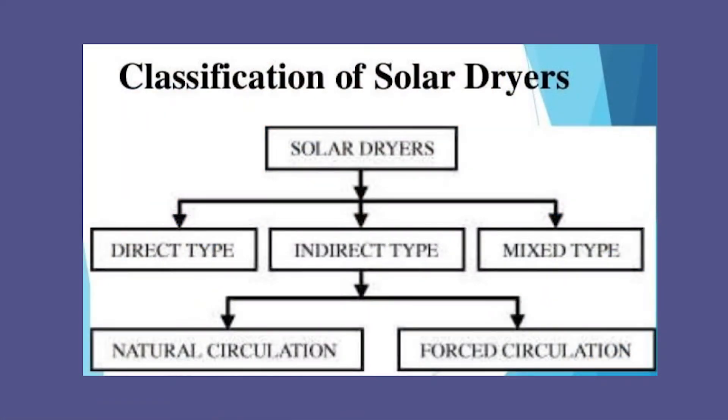Further, these three types — direct, indirect, and mixed mode dryers — are classified into natural circulation and forced circulation. Natural circulation means the air flows with buoyancy energy, while for forced circulation a fan is used to forcefully allow the air to flow.